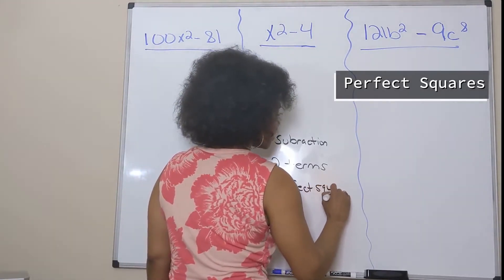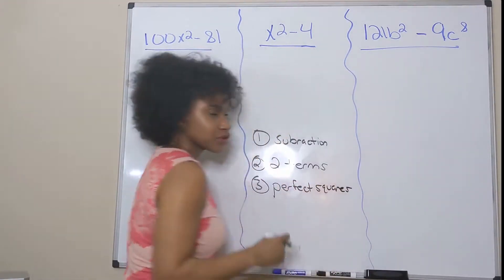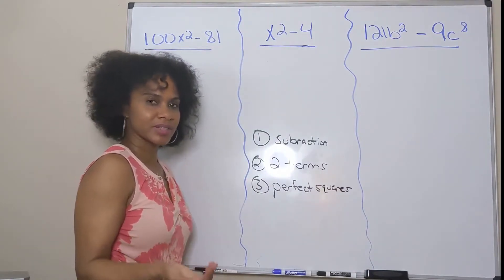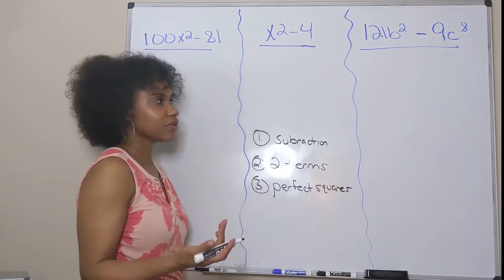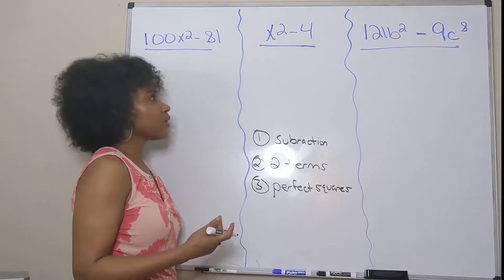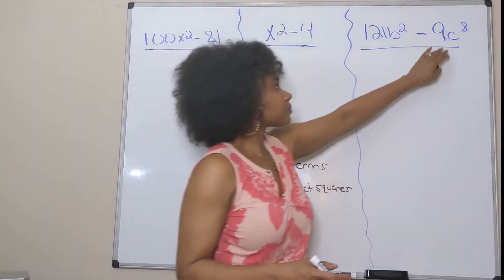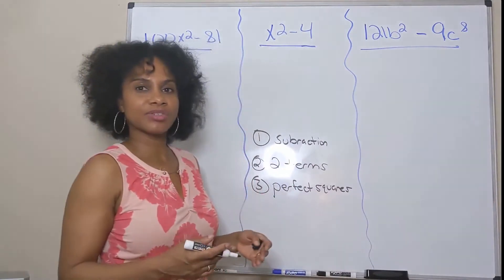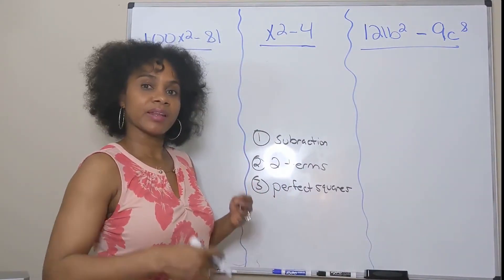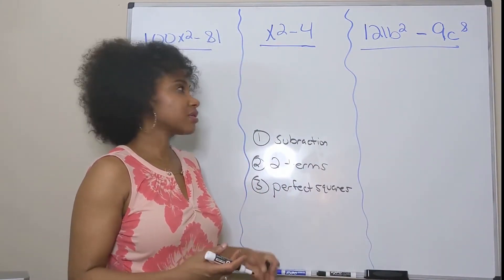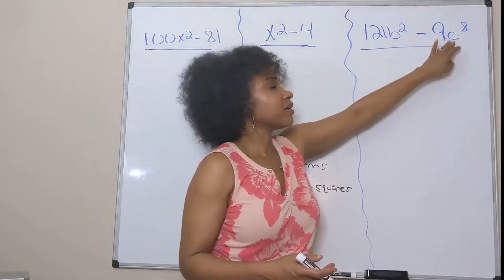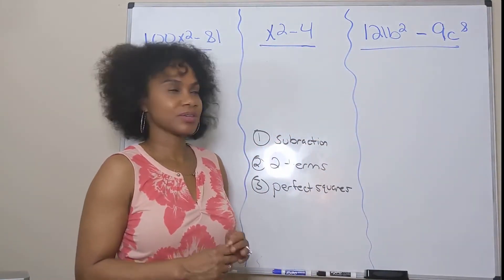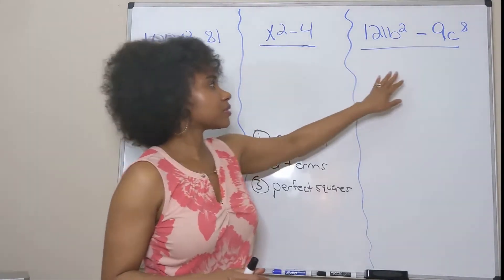Two terms — each of these has two terms — and they both have to be perfect squares. Perfect squares meaning like 9, because the square root of 9 is 3, or 16 because the square root of 16 is 4. When you're looking at exponents, they need to be even, and to take the square root you simply take half of the exponent.